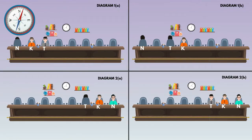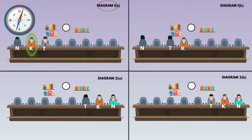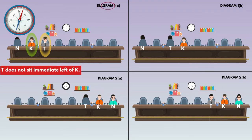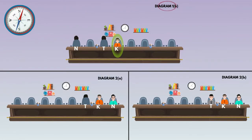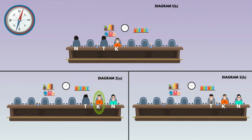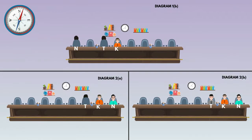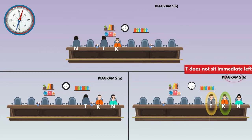Go to the next statement: T does not sit immediate left of K. In diagram 1A, K sits here and faces south direction, and T sits immediately to the left of K — so cancel this diagram. In diagram 1B, T sits immediate right of K, so T does not sit immediate left of K — this is valid. In diagram 2A, T sits immediate right of K — valid. In diagram 2B, T sits immediate left of K — so cancel this diagram.